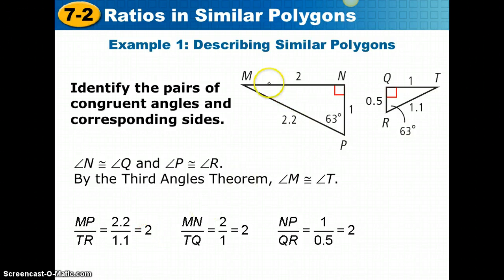Then I'm going to pick another ratio of corresponding sides. If MP, which is the hypotenuse of this triangle, is proportional to TR, the hypotenuse of the other one, then the corresponding legs must be proportional. The longer leg MN would correspond to the longer leg TQ. MN to TQ is 2 over 1, that is also 2.